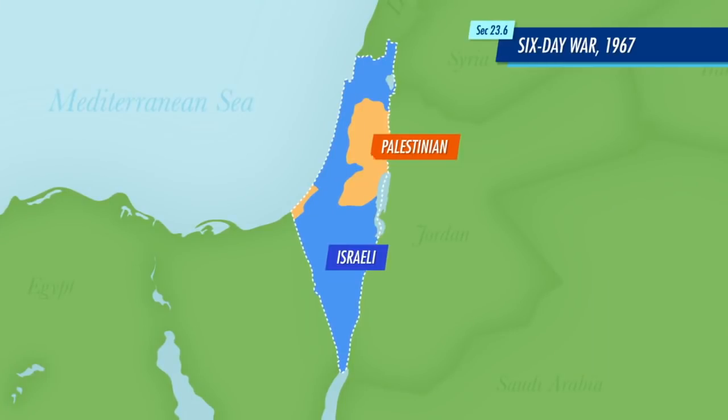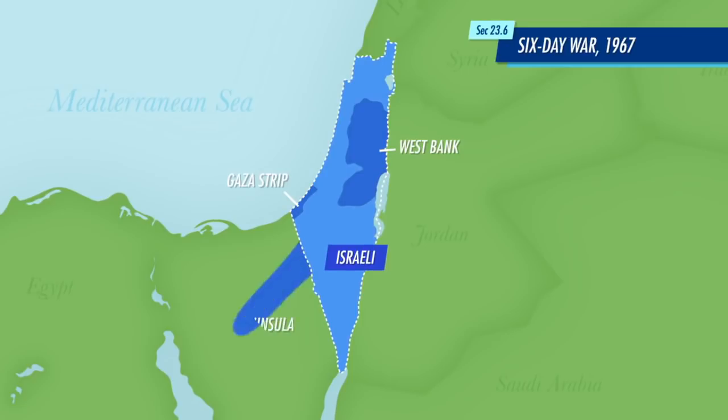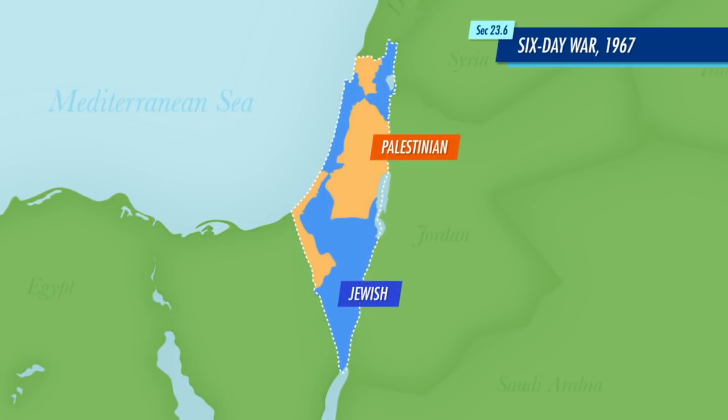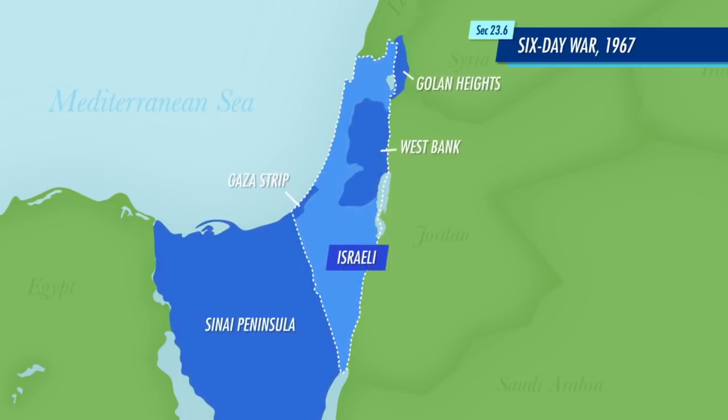Then the Six Day War happened in 1967 and Israel really kicked butt in that one and grew by even more, occupying the West Bank, Golan Heights, Gaza Strip, and the Sinai Peninsula, and then gained control over the West Bank, the Gaza Strip, the Sinai Peninsula, and the Golan Heights. The 1947 proposal looked like this. By 1967, things looked like this.